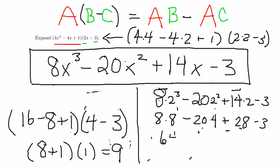64 minus 80 plus 28 minus 3. Now, 64 plus 28 is 92. Minus 80 minus 3 is minus 83. 92 minus 83 equals 9.